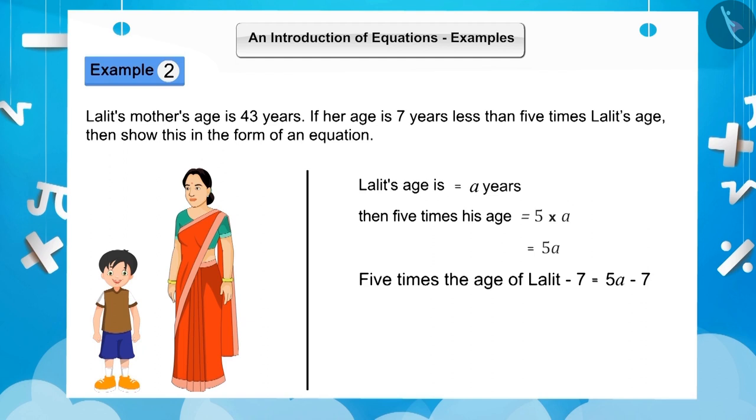According to the question, if mother's age is 43 years, the equation will be formed in this way: 5a minus 7 is equal to 43. In this equation the expression is 5a minus 7 equals 43.